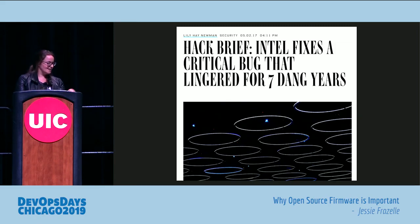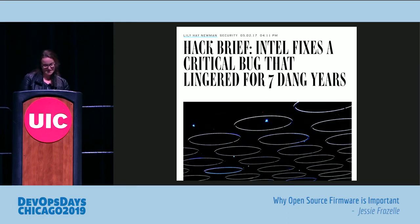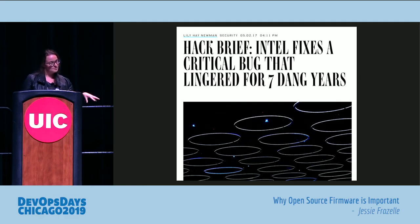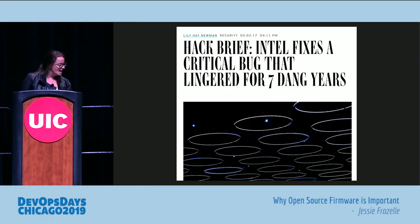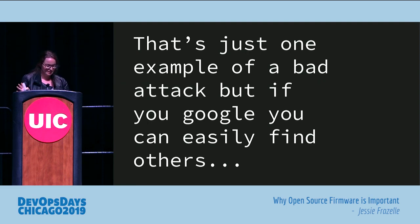In 2017, there was a critical bug in all Intel processors that happened because of this Minix layer — that's when it came out they were using Minix. There was a bug in the network server, the web server in Minix inside the Intel management engine. Why is that even there is a really good question, and why is it still there is an even better question. That's just one example of a bad attack, but if you Google firmware bugs, you can easily find others.